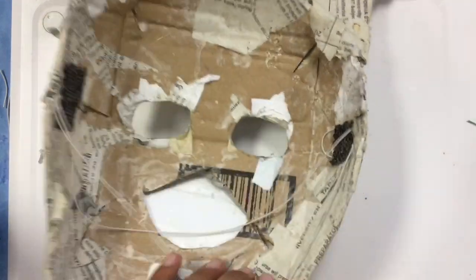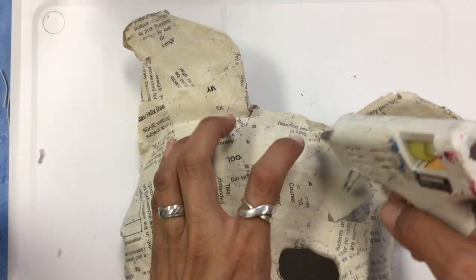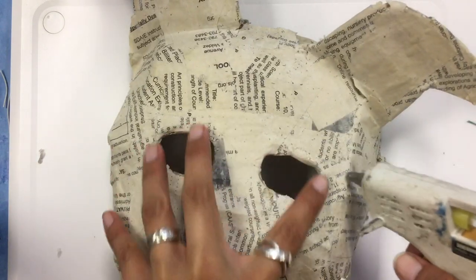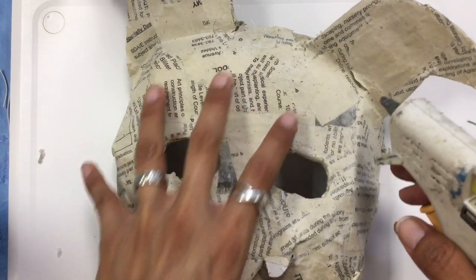That's using the glue gun. You can also use it to attach feathers, string, bright things, or ribbon once your mask has been painted. You would use it the same way in the front.